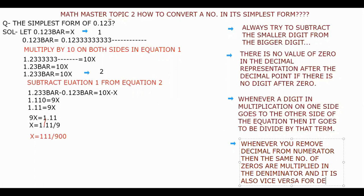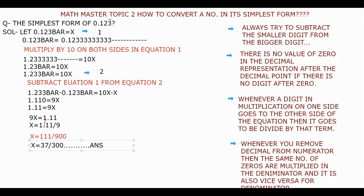So you are seeing here that 111 is also divisible by 3 and 900 is also divisible by 3. So we can write it here in simplest form: x equals to when we divide 111 by 3, we will get 37 divided by 300. So now it cannot be further broken down into smaller, so it's our answer.